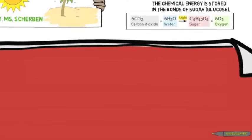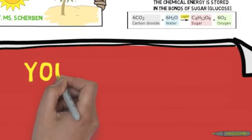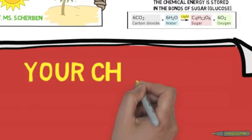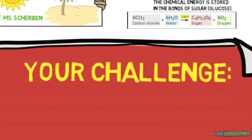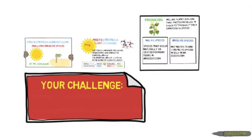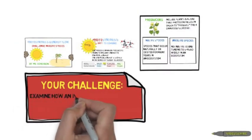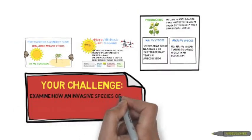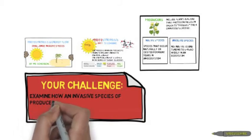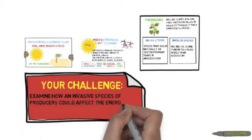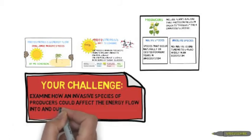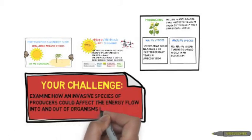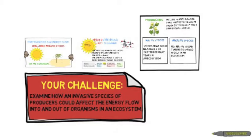In this video, your challenge will be to examine how invasive species of producers could affect the energy flow into and out of organisms in an ecosystem.